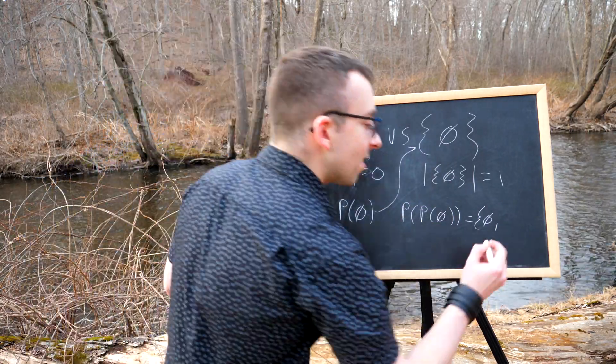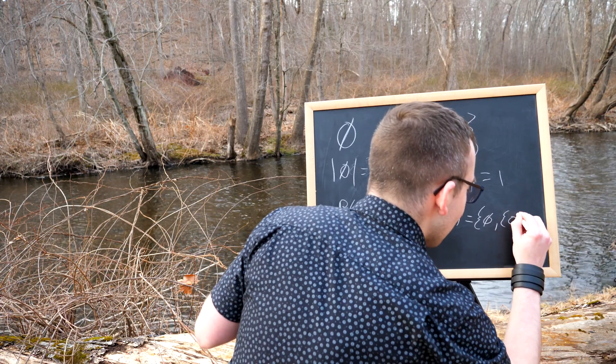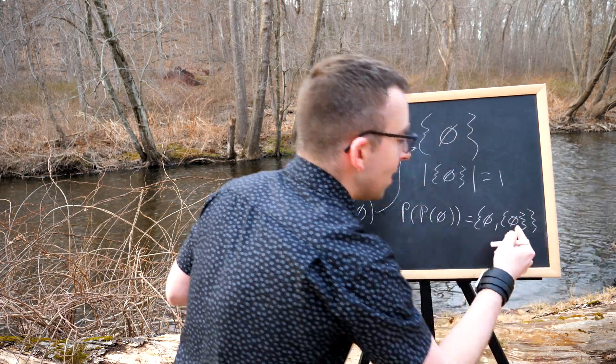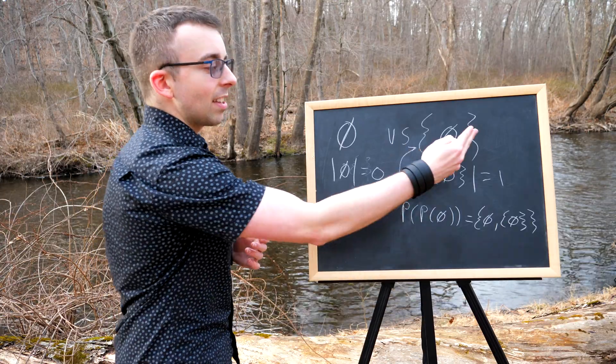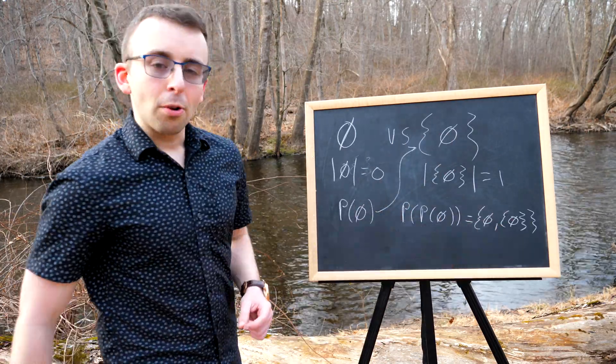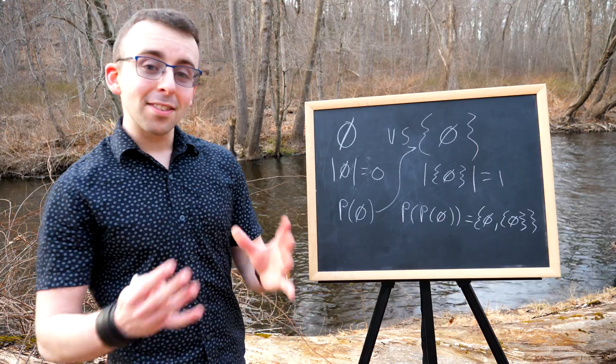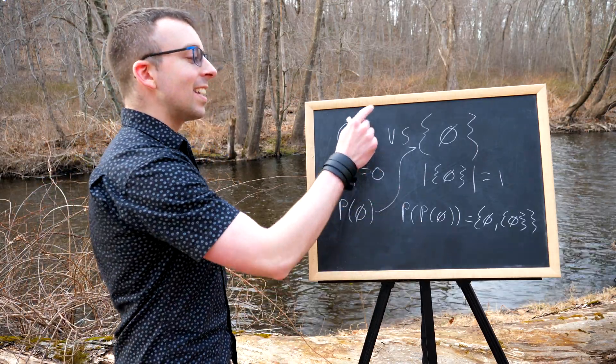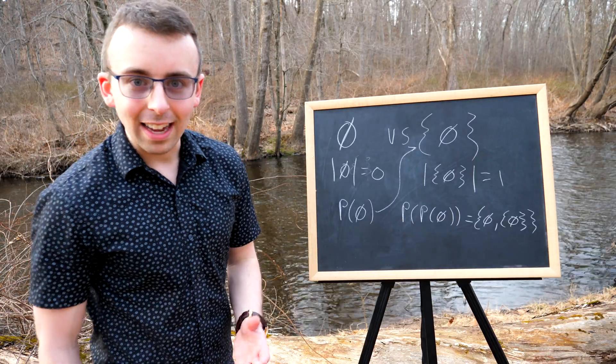So another one of its subsets is the set containing the empty set, which is, of course, itself. Since every set is a subset of itself, you shouldn't be too surprised to see that guy there. So that's the difference between the empty set and the set containing the empty set.